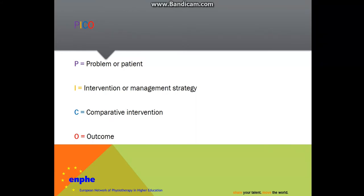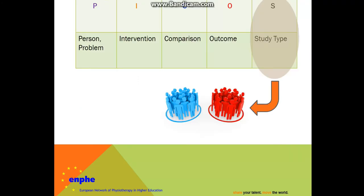P stands for problem or patient. I stands for intervention or management strategy. C stands for comparative intervention. And O is the outcome. In an updated version, you can also encounter the S, making it PICOS, where S stands for study type — for example, a randomized control trial. So you can also take into consideration a study type.